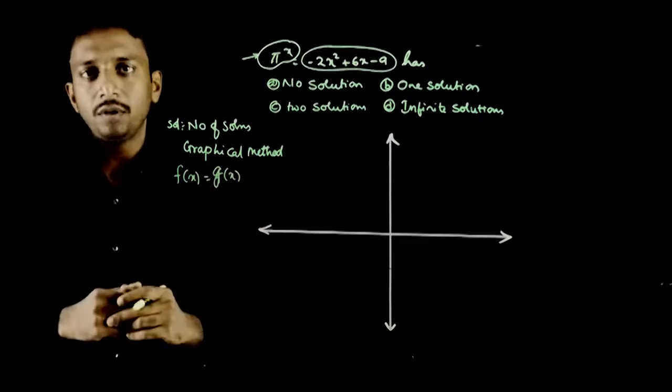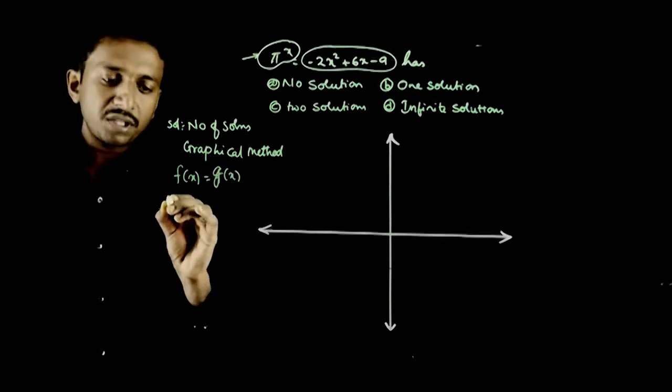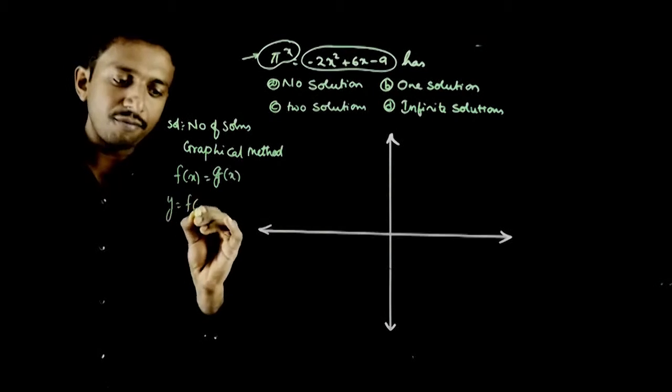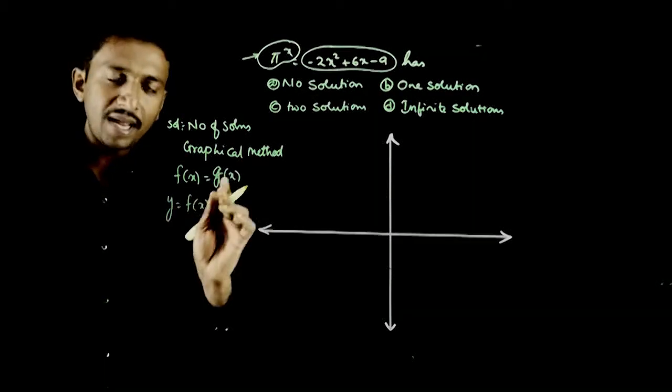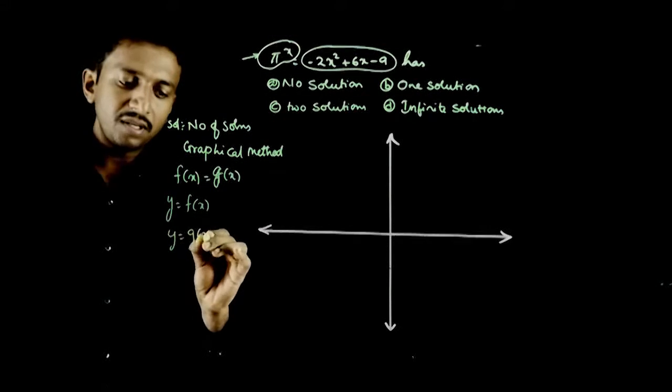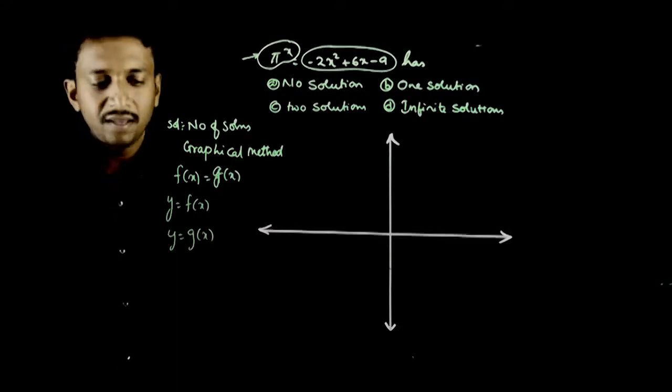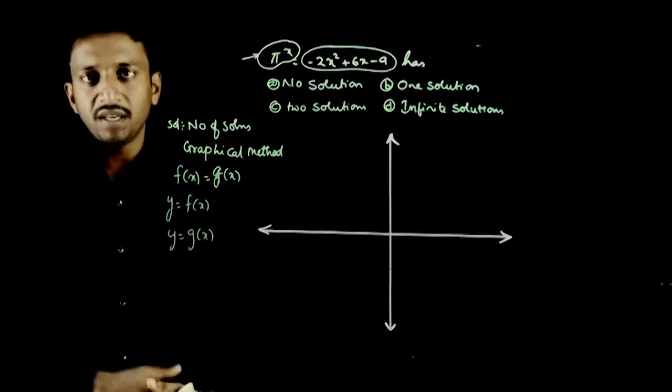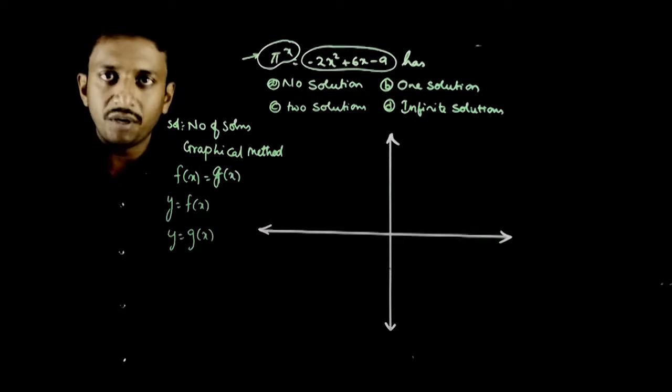If I want the number of solutions of this equation, first what I draw is the graph of y = f(x) and then I will draw the graph of y = g(x). Y = f(x) and y = g(x) graphs we draw.